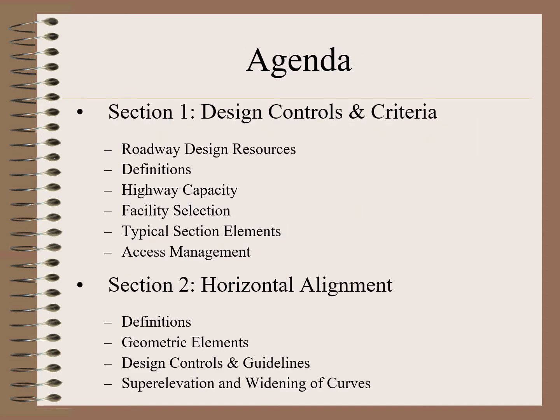The agenda is as follows. Section 1: Design Controls and Criteria. In this section, we will be covering roadway design resources, definitions, highway capacity, facility selection, typical section elements, and access management.